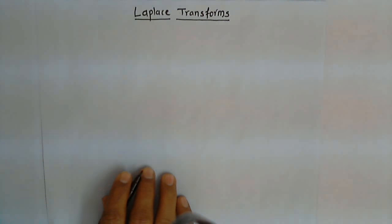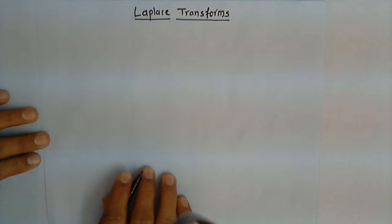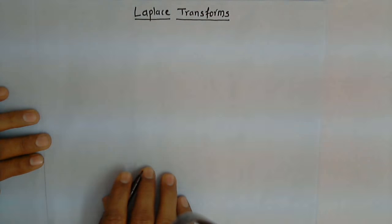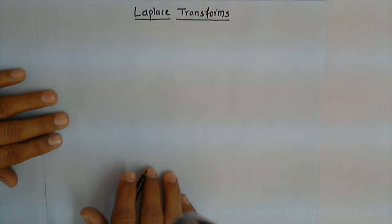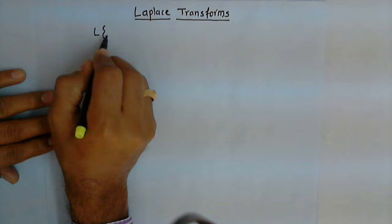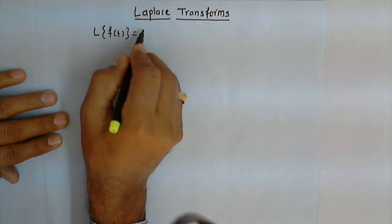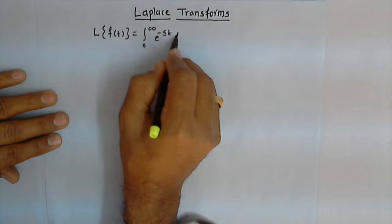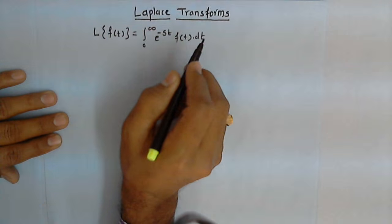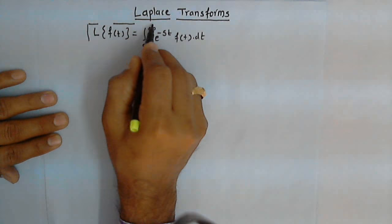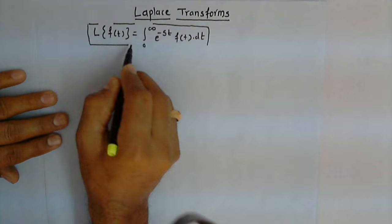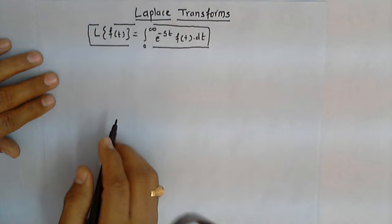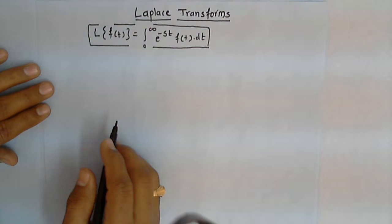Laplace transform is an operator which transforms a function of real variable t to a function of complex variable s. Here t denotes time and s stands for frequency. It is given by: Laplace of f(t) equals the integral from 0 to infinity of e raised to minus s t times f(t) dt. This transforms the function of t into the function of s. Now we will see the Laplace transform of some standard functions.